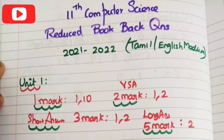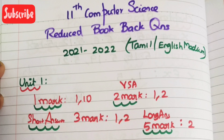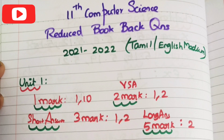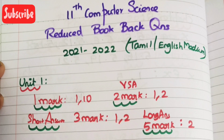Unit 1: 1 mark question — 1 to 10. 2 mark very short answer — 1 and 2. Short answer 3 mark question — 1 or 2. Long answer 5 mark question — 2.